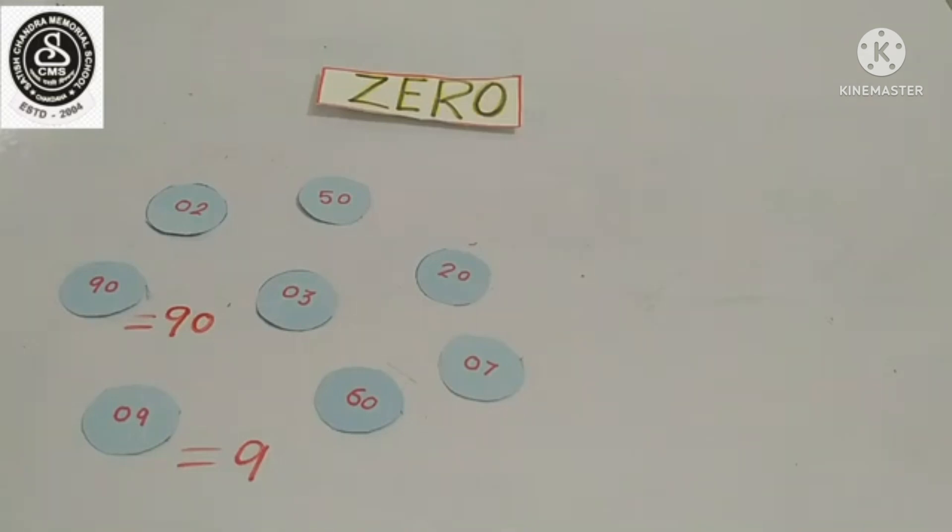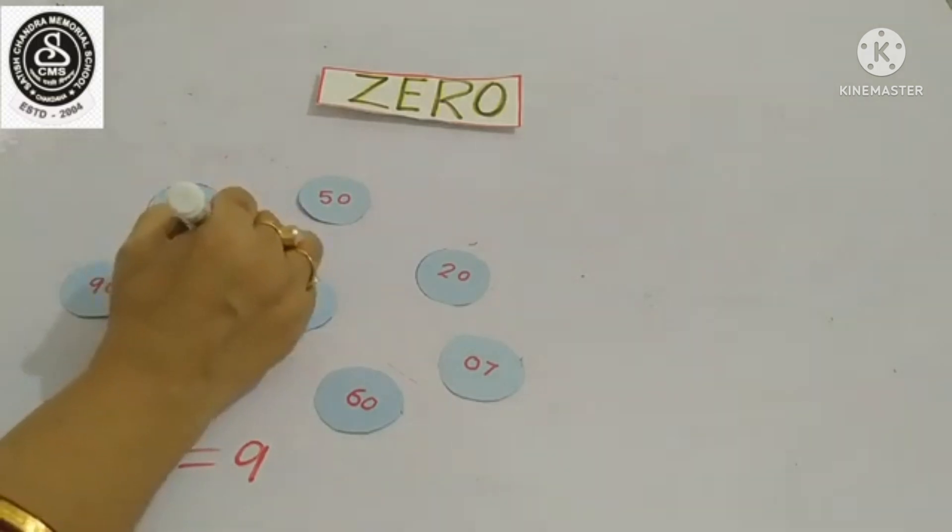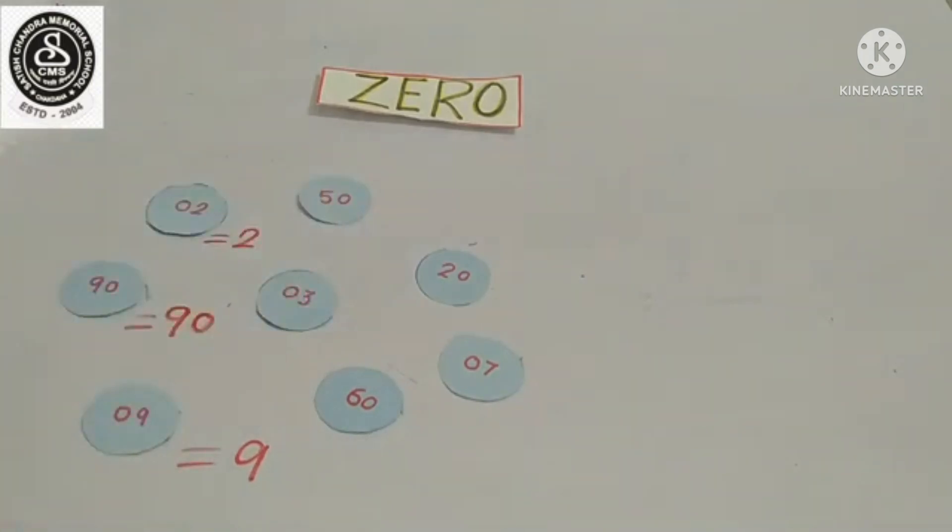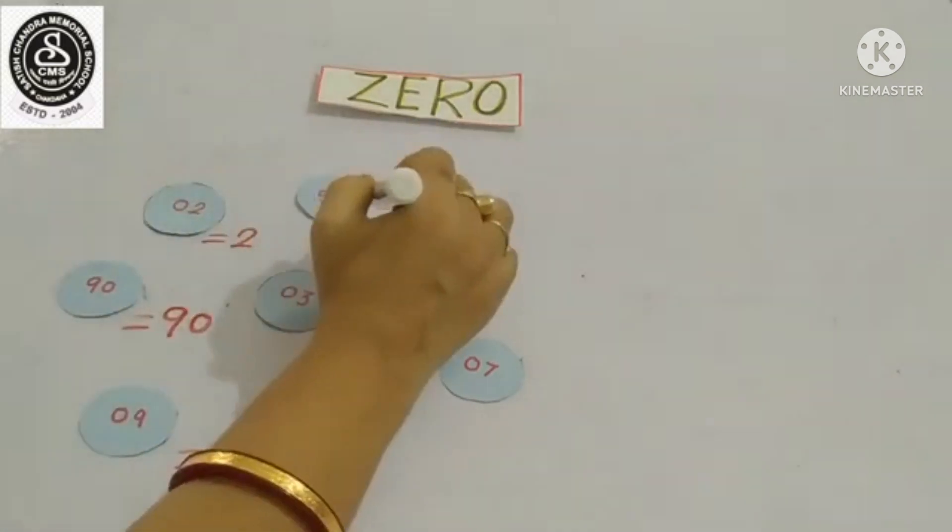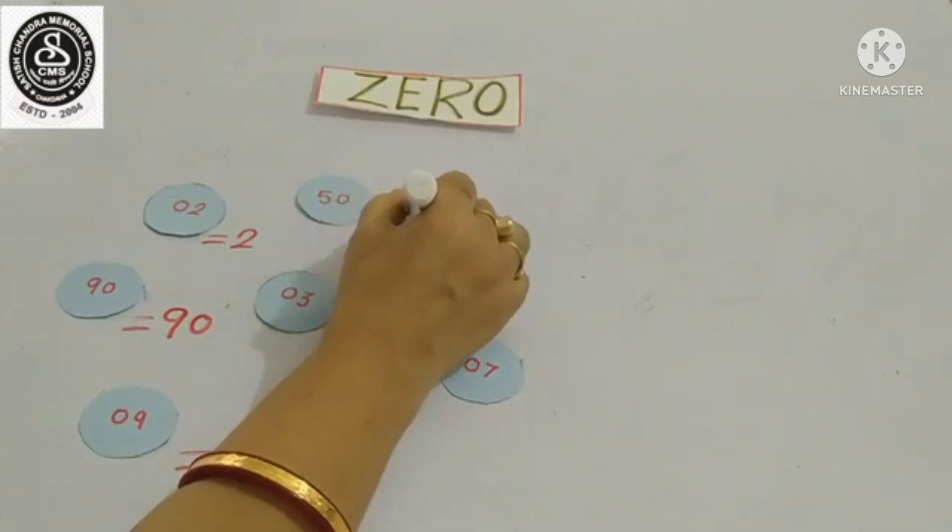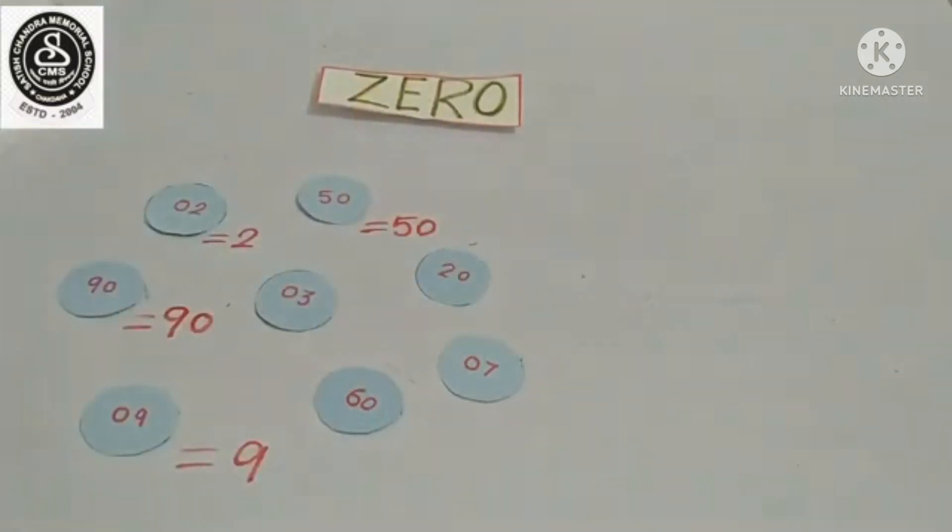And my next number is zero two. So, zero two equals only two. But my next number is five zero, fifty. So, fifty equals five zero, fifty. So, in this way, you can read all these numbers on your own. I hope you all have enjoyed my lesson.